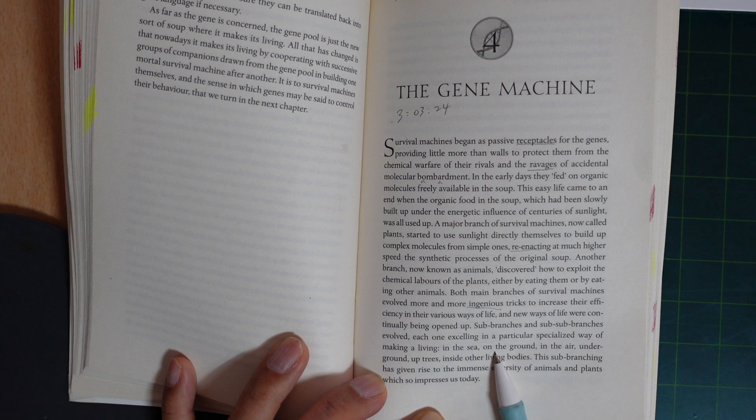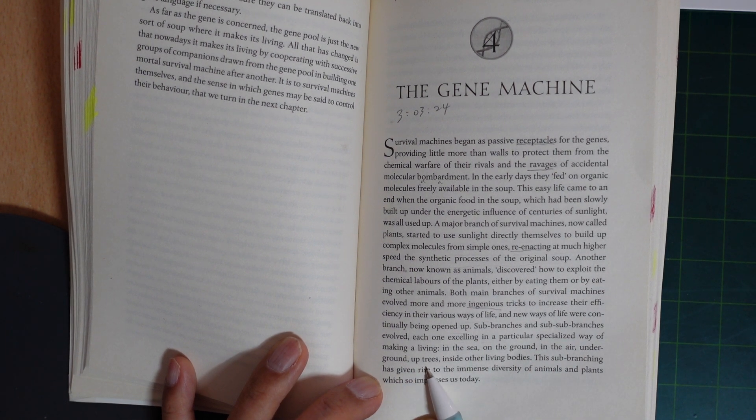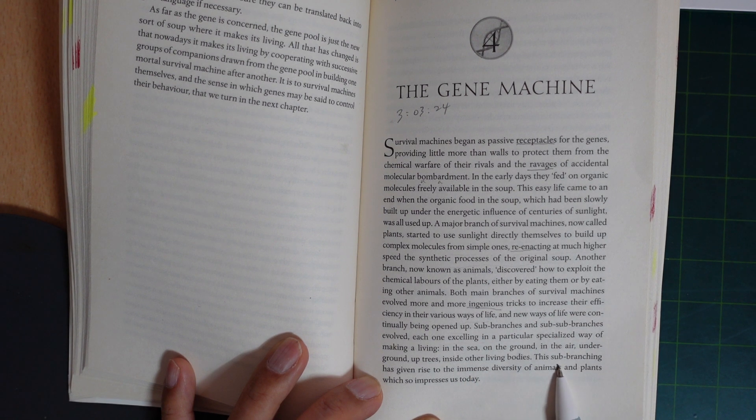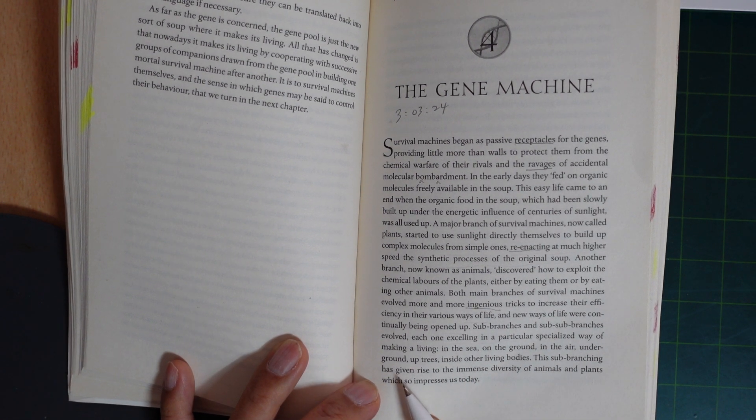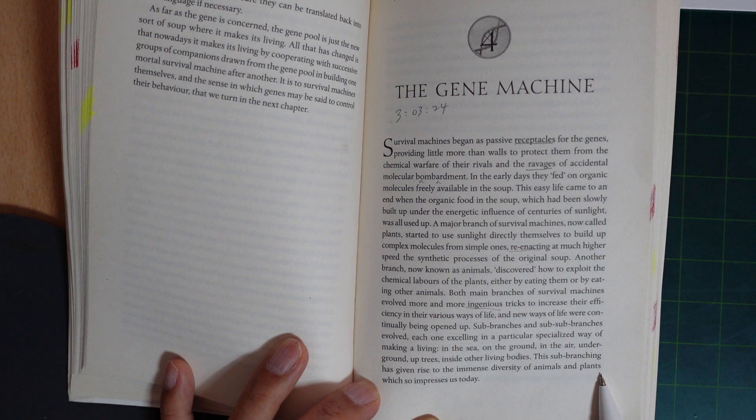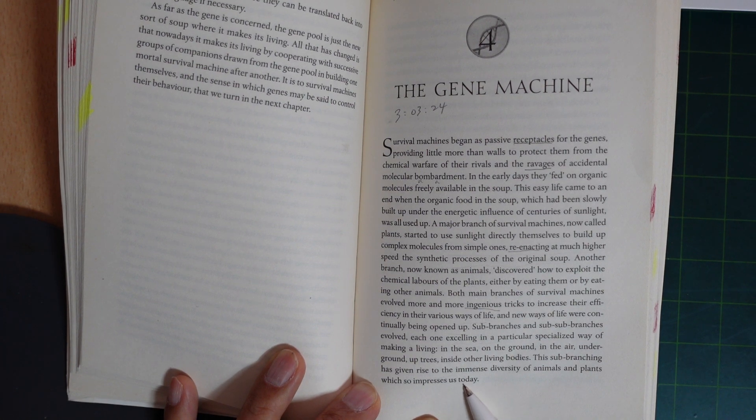In the sea, on the ground, in the air, underground, in trees, inside other living bodies—this sub-branching has given rise to the immense diversity of animals and plants which so impresses us today.